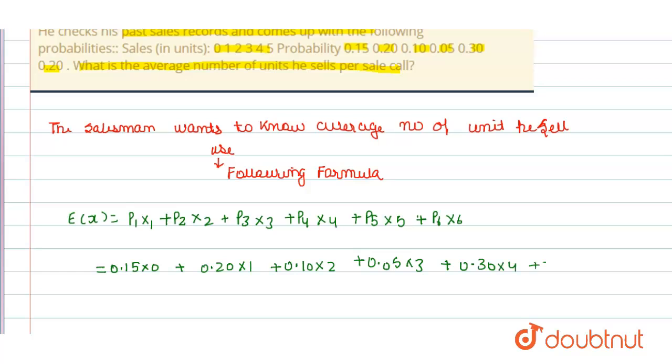So we get E(X) = 2.75. So he can expect to sell 2.75 units.